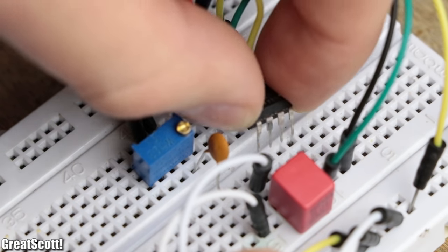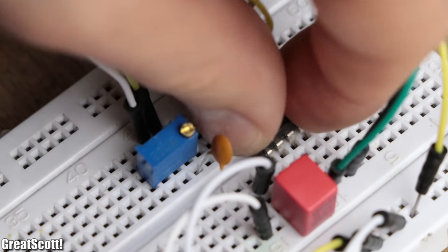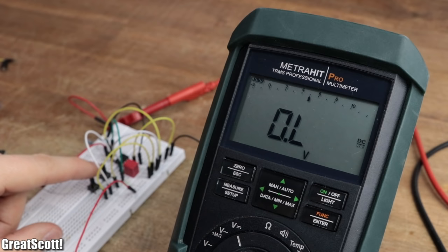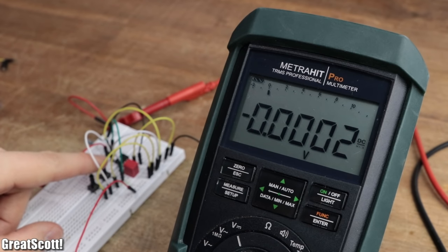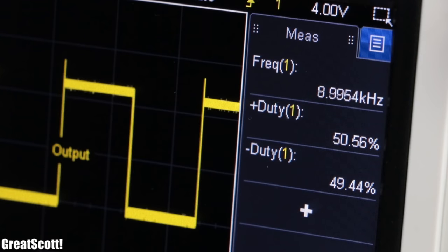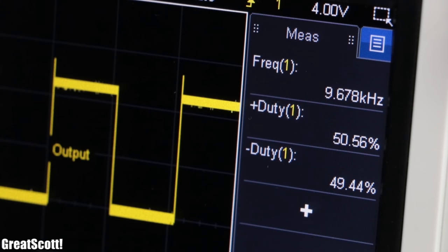The solution is to use a CMOS 555 timer like the TLC 555. This version can achieve an output voltage very close to the supply voltage through the use of MOSFETs as the output stage, and thus can create a 50% duty cycle with ease.